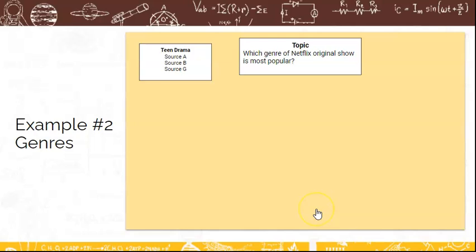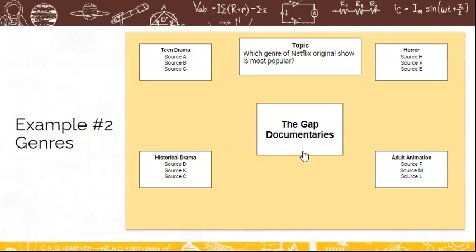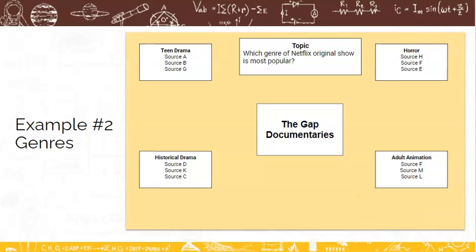Perhaps several of my sources have looked at teen dramas. Maybe others have looked at the genre of horror. My third set of sources is looking at historical dramas, and then my fourth set is looking at adult animation. So previous researchers have looked at popularity as it relates to teen dramas, horror, historical dramas, and adult animation. An obvious gap might be documentaries. Nobody in this set of researchers has looked at documentaries. Perhaps that could be a gap I could address. There are clearly many other genres that are available on Netflix, but perhaps my research needs to be just on documentaries. Remember, we need to make a singular choice. We don't need to identify every gap that hasn't been addressed.